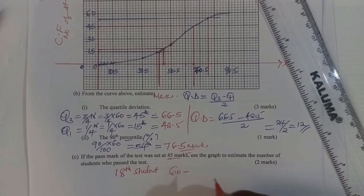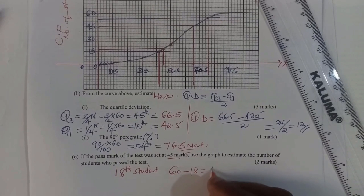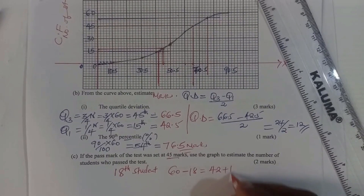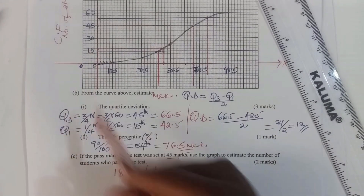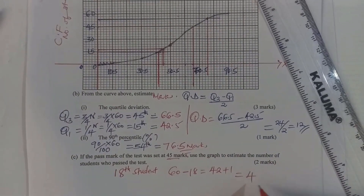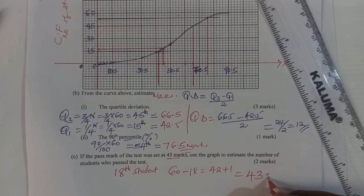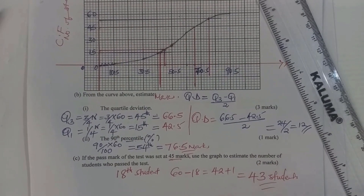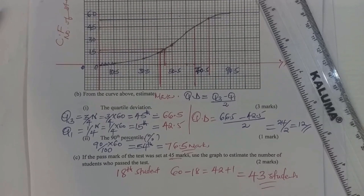The 18th student obtained the pass mark, so all students from 18th to 60th passed. To count: 60 − 18 = 42, then add 1 because the 18th student also attained the pass mark. Therefore 43 students passed the test.